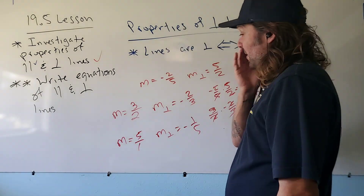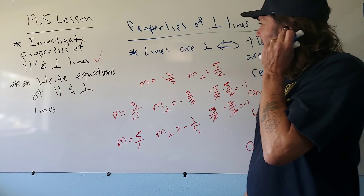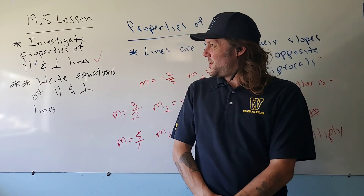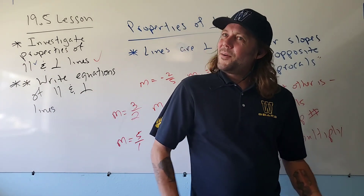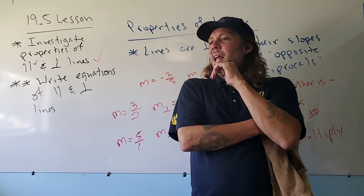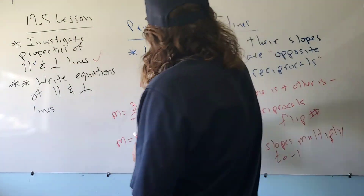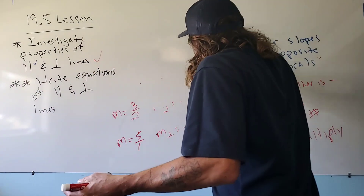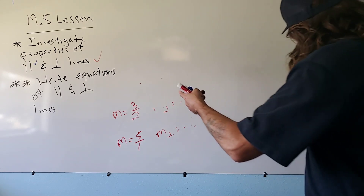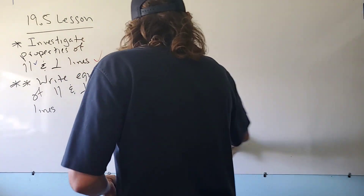Now we'll talk about writing equations of parallel and perpendicular lines. Every problem in this section can be answered by knowing the properties of parallel and perpendicular lines and using the point-slope formula to write the equation. The formula we'll use is: f(x) = y₁ + m(x + (−x₁)), where y₁ is the first y-value, m is the slope, and x₁ is the first x-value.